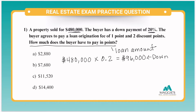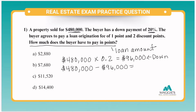Now that we have the down payment, we can find the loan amount. All we have to do is subtract the down payment from the property sales price. So let's take $480,000 and subtract $96,000. That's going to equal $384,000. That is now my loan amount.